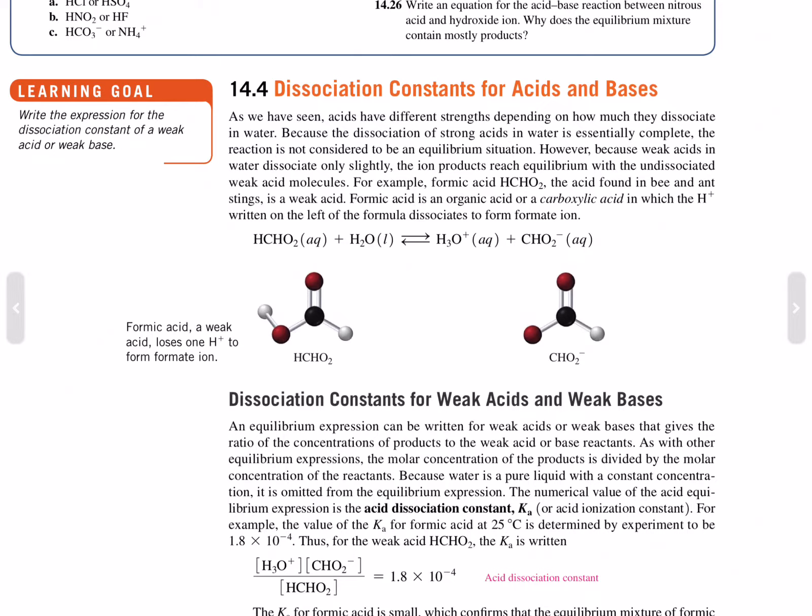Formic acid is an organic acid or a carboxylic acid in which the proton, written on the left of the formula, dissociates to form the formate ion, CHO2 minus 1 ion.